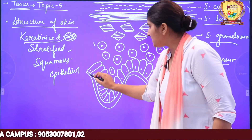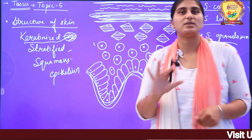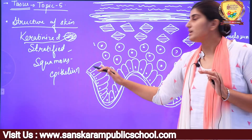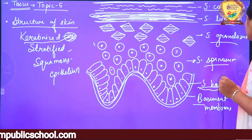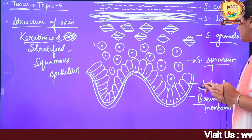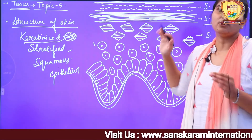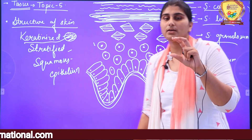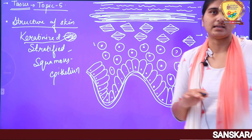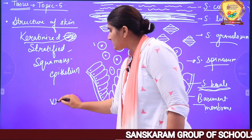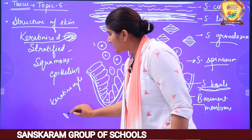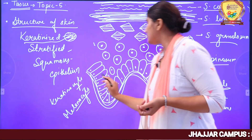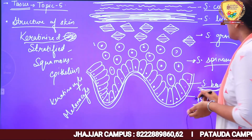Starting from the bottom, there is the basement membrane. In any epithelial tissue, the basement membrane is at the very bottom, inside which blood vessels and nerves are present. Just above the basement membrane is a layer of columnar-like cells called stratum basale. This is the layer where cells divide and migrate upward — all the layers above are produced by this layer. Here we find keratinocytes (the cells that produce keratin) plus melanocytes, which produce melanin that gives our skin its color.